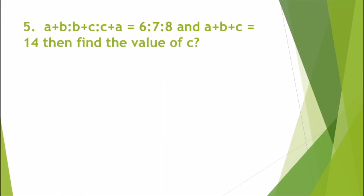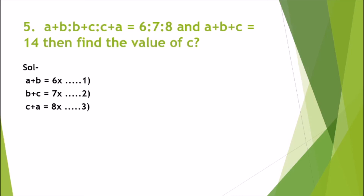Question 5: (A+B):(B+C):(C+A) = 6:7:8 और A+B+C = 14 दिया है, हमें C निकालना है। हम लिखते हैं: A+B = 6k (equation 1), B+C = 7k (equation 2), C+A = 8k (equation 3)। साथ ही A+B+C = 14 (equation 4)।